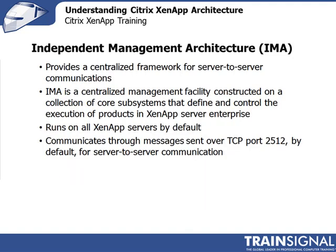Independent Management Architecture, otherwise known as IMA, provides a centralized framework for server-to-server communication. IMA is installed on every XenApp server by default, allowing the servers to communicate with one another to share information like load and server status. It's the protocol used to create the farm and interconnect the different XenApp servers. By definition, IMA is a centralized management facility constructed on a collection of core subsystems that the different XenApp servers can use to interconnect.